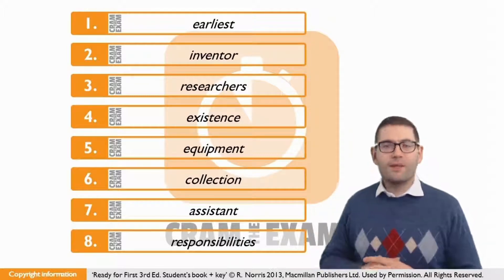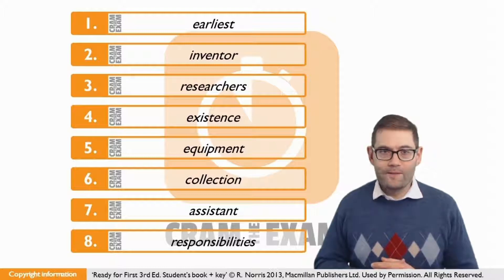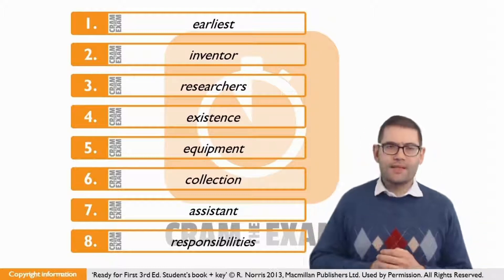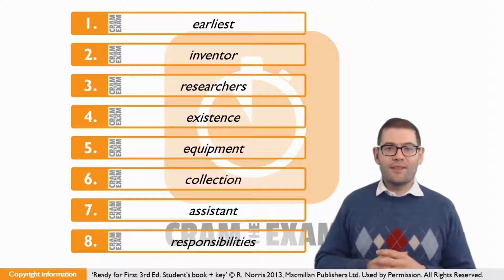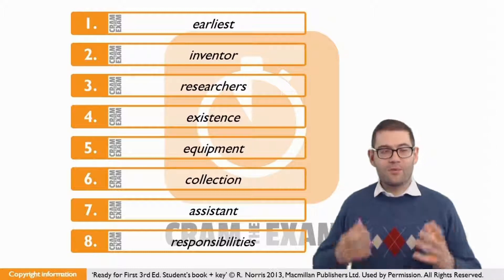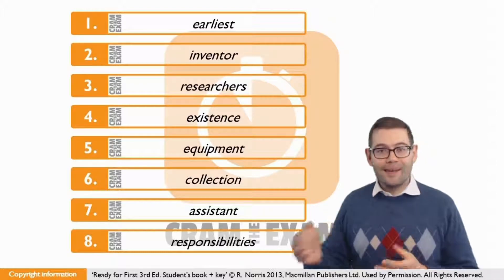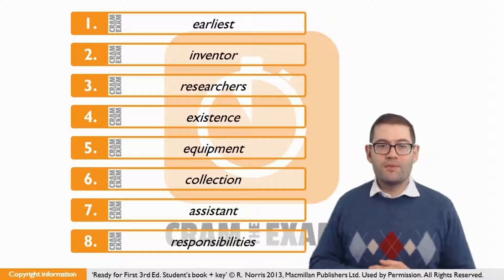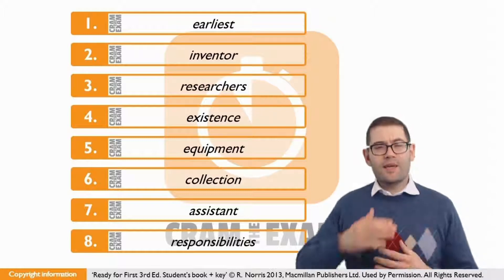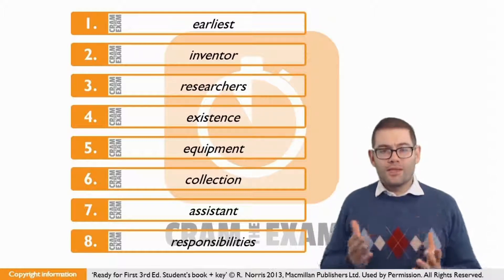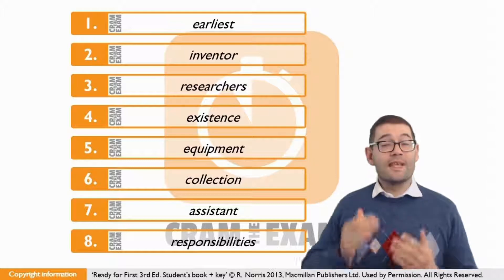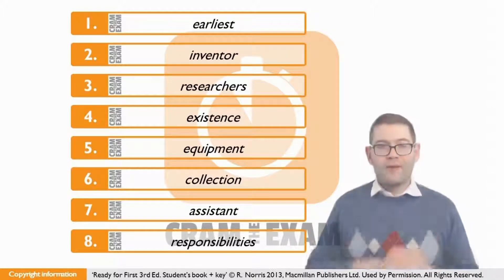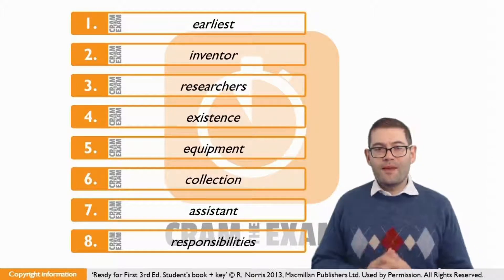For number seven, let's look at the phrasal verb first: 'to take on someone' means to employ someone. Before the gap we've got an indefinite article, which tells us this is going to be a singular noun — not uncountable, but singular. Given the context we're presented with, it's going to be a singular personal noun.